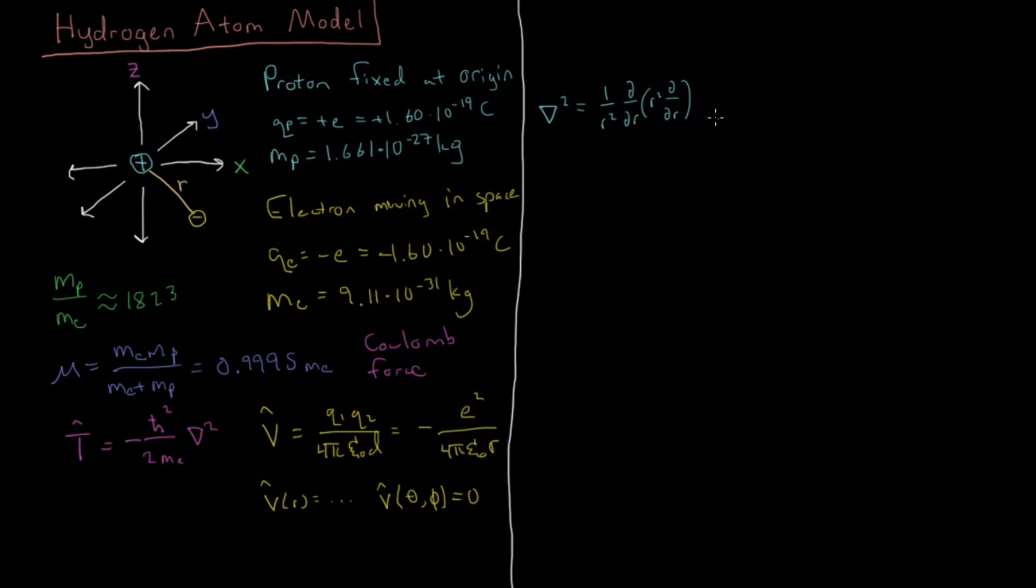Plus 1 over r squared, sine theta, partial with respect to theta, sine theta, partial with respect to theta. Again, be careful about order of operations, take that first differential, then multiply times sine, then take the second differential, and finally, plus 1 over r squared, sine squared theta, times second derivative with respect to phi. And that's our total Laplacian operator.